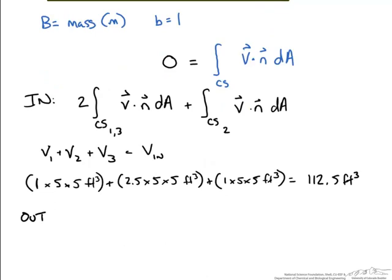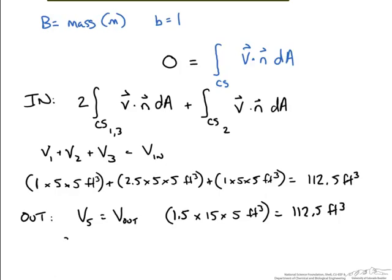If we do this for the other side, what is left is more straightforward. We will say the volume out, and we also get 112.5 feet cubed. We have shown that the volumetric flow rate in equals the volumetric flow rate out. We have answered the second part by determining what has entered our control volume and what has left.